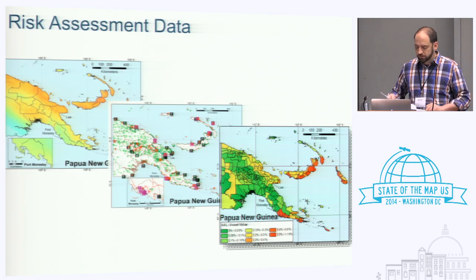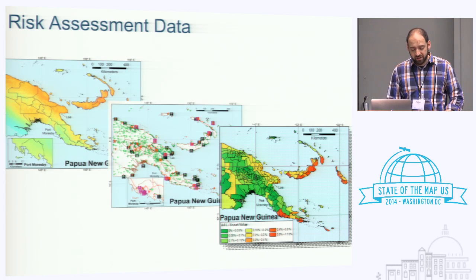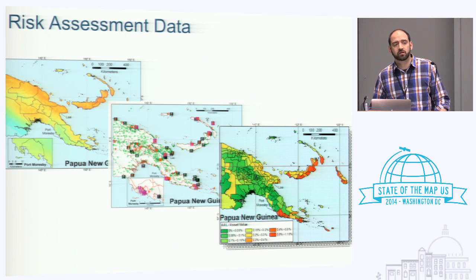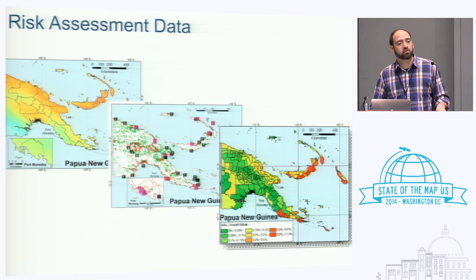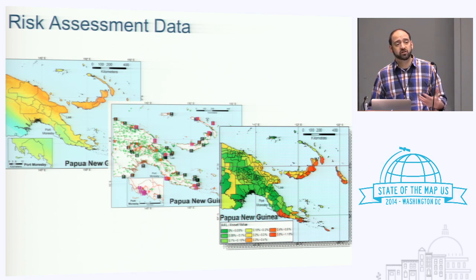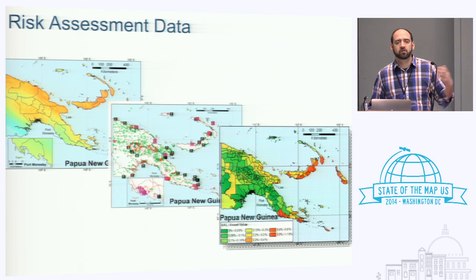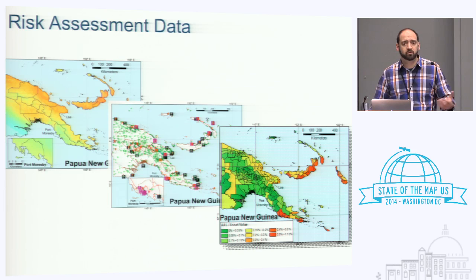The first step then is trying to really understand and manage that risk. This is a complicated science. It really began with the nuclear power industry trying to understand where to site nuclear reactors and what precautions to take when building them. Later on it was picked up by insurance and reinsurance industries trying to set premiums, and recently it's being taken up in international development thinking about disaster risk reduction and preparedness.